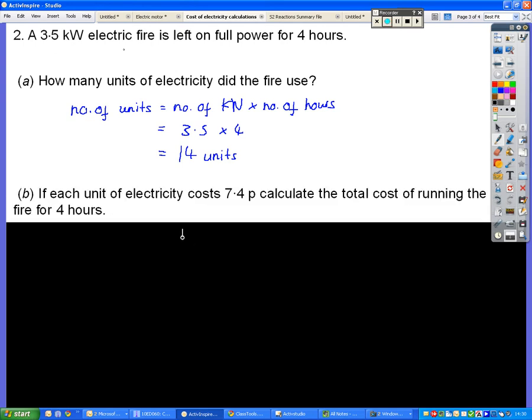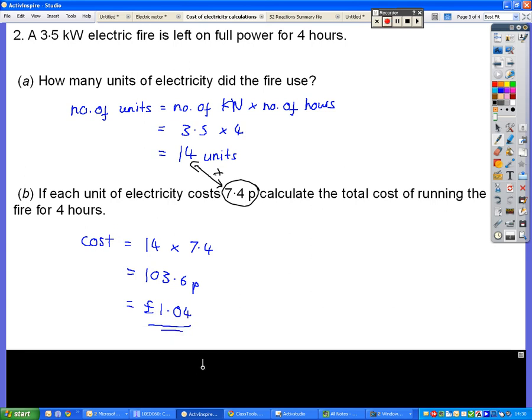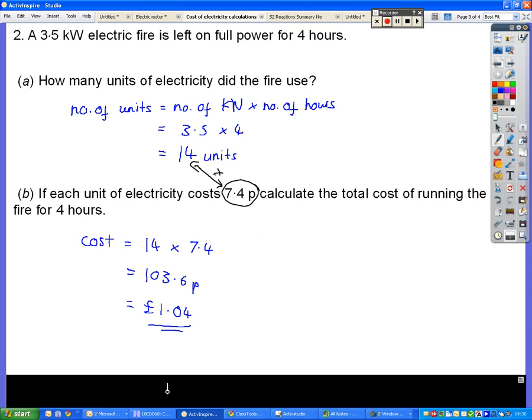If the price per kilowatt hour is 7.4 pence, you want to figure out how much 14 units cost. So all you do is multiply those two numbers together and you get a cost that will be 103.6 pence. If you round that up and make it into pounds and pence, it's roughly 1 pound and 4 pence. So that's how you would calculate the cost.